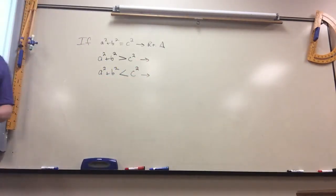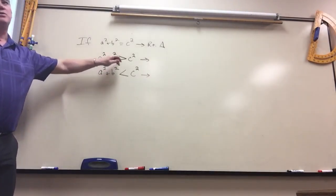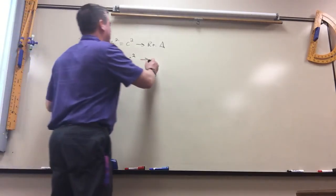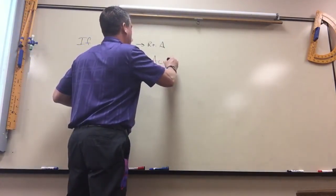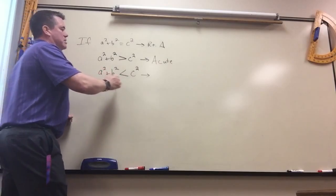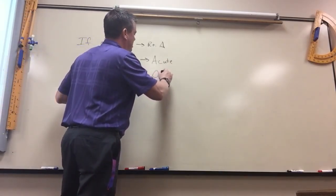It's kind of the exact opposite of what you would think. Obtuse is greater than 90, but if a squared plus b squared is greater than c squared, it's actually acute. If a squared plus b squared is less than c squared, it's obtuse.